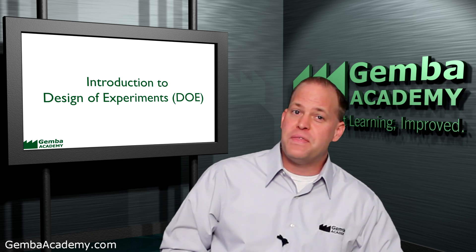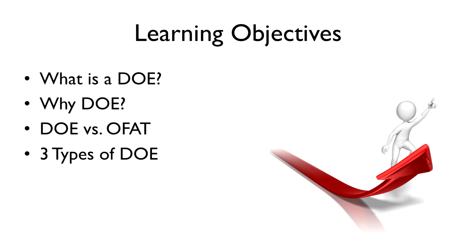By the end of this module, you'll know what a design of experiment is and why it's so powerful. You'll also understand a key difference between a DOE and something called a one factor at a time, or OFAT, experiment. And finally, you'll know what the three most popular types of DOE are as we prepare to dive into each of them in coming modules.